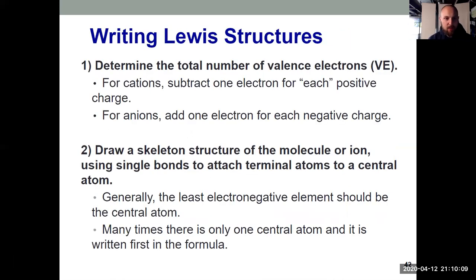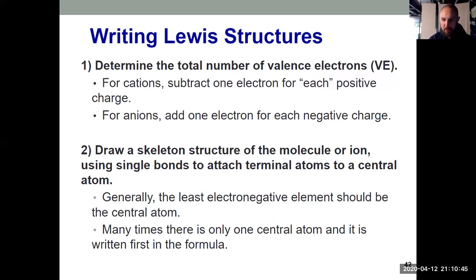In chapter seven, you'll want to know how to write Lewis structures using a set of rules. Rule one: determine the total number of valence electrons by adding together the valence electrons of every atom in the molecule. For polyatomic ions, adjust the count: subtract one electron for each positive charge (e.g., ammonium with +1 charge means subtract one), and add one electron for each negative charge (e.g., sulfate with −2 charge means add two electrons).